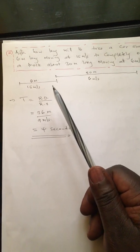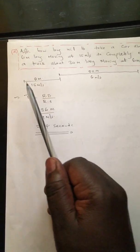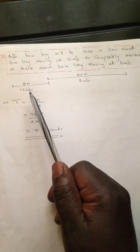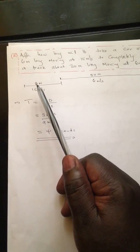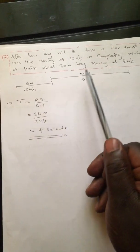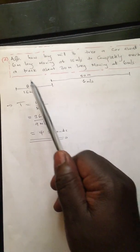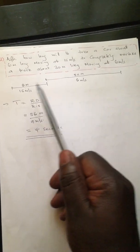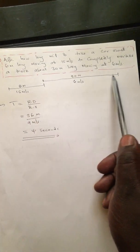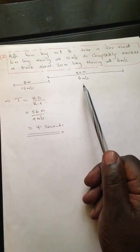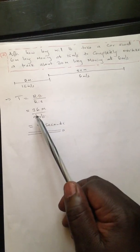As with approaching bodies, you use the exact distances and their speeds. If the distance is in meters, the speed must be in meters per second. Time equals relative distance over relative speed. The relative distance is the total length of both bodies: 6 plus 30 equals 36 meters. The relative speed is the difference of their speeds since they move in the same direction: 15 minus 6 equals 9 meters per second.